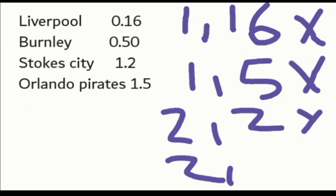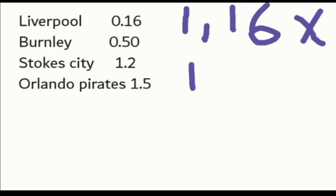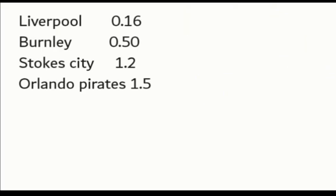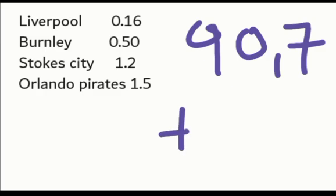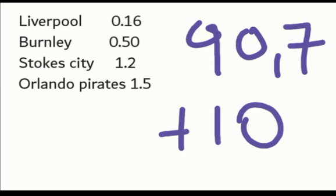So if you want to place 10 Rand again, 10 times 9.7 is actually 97. So that's how much you will make if you bet on these four teams, plus your money back — your 10 Rand will come back, if you win, if all of these teams win. So that's how simple it is to calculate the odds so that you can know how much you will get.